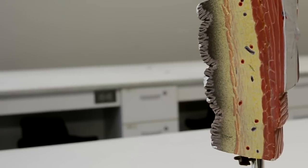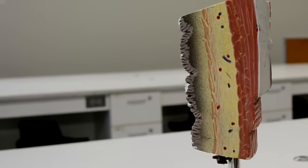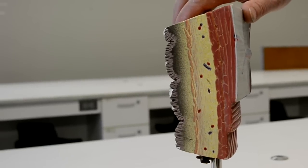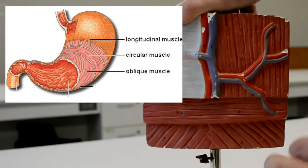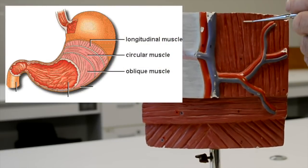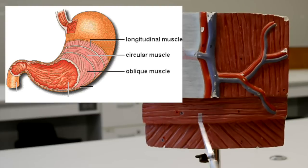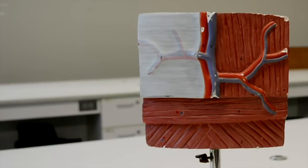If we take a look at the muscularis throughout the digestive tract, there are two layers of smooth muscle. There is an outer longitudinal muscle and an inner circular layer. In the stomach, we have an additional third layer, which is the oblique layer.